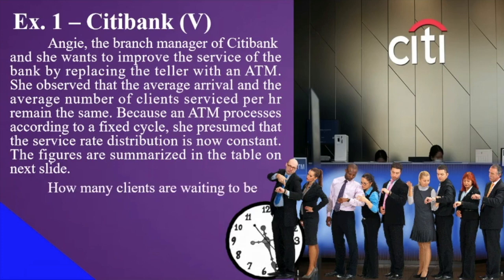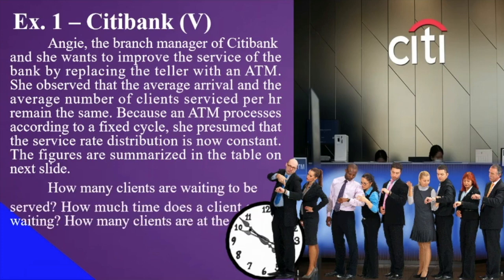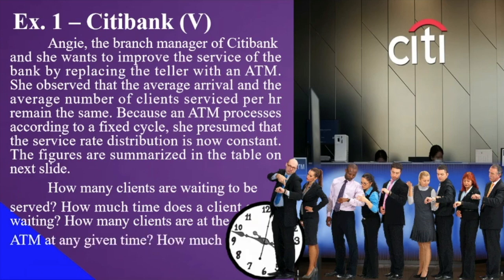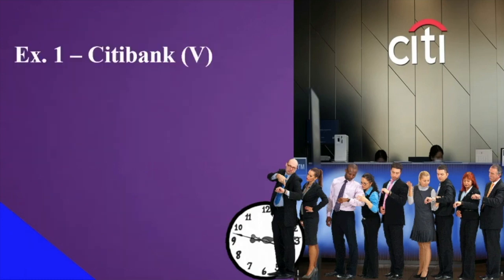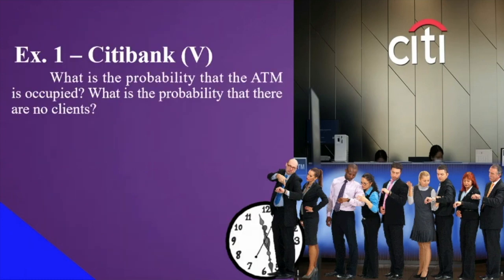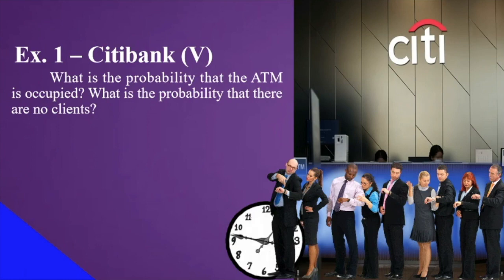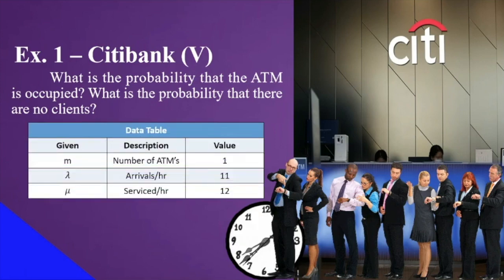The figures are summarized in the table on the next slide. The questions are: How many clients are waiting to be served? How much time does a client spend waiting? How many clients are at the ATM at any given time? And how much does a client spend at the ATM? What is the probability that the ATM is occupied or busy? What is the probability that there are no clients — or P sub zero?